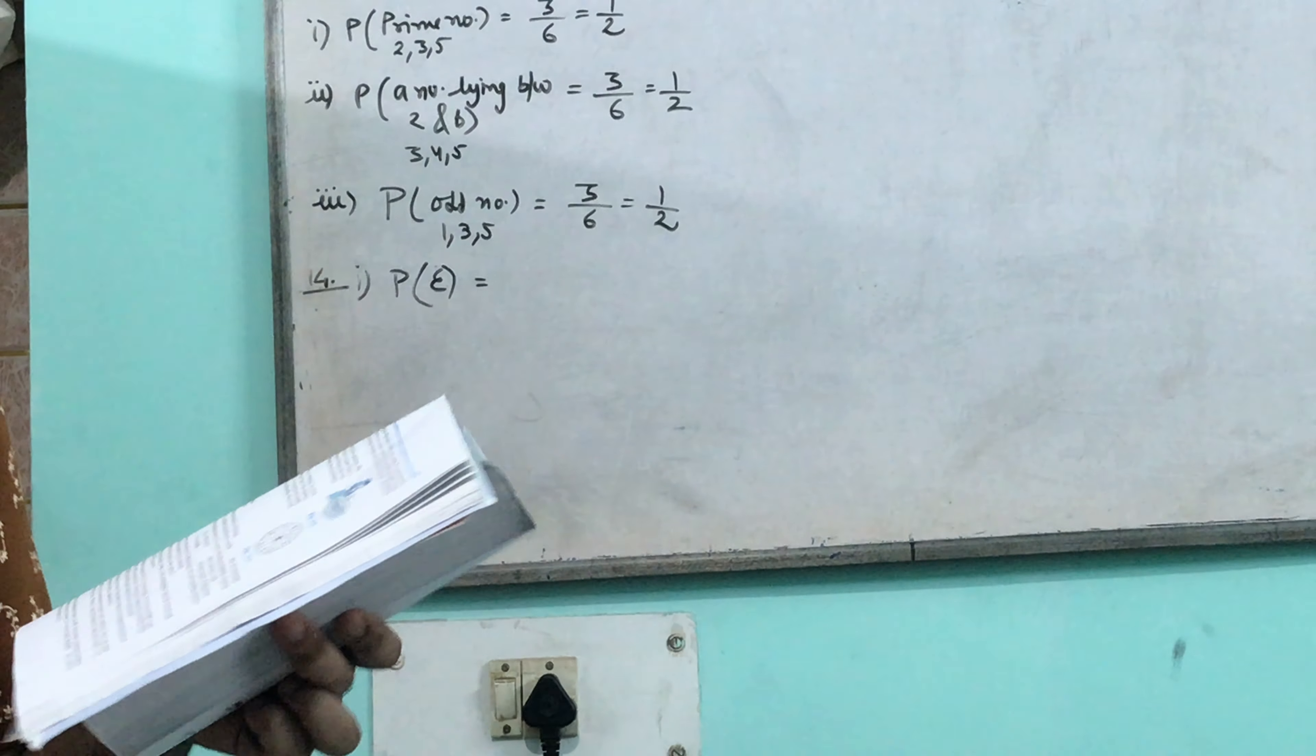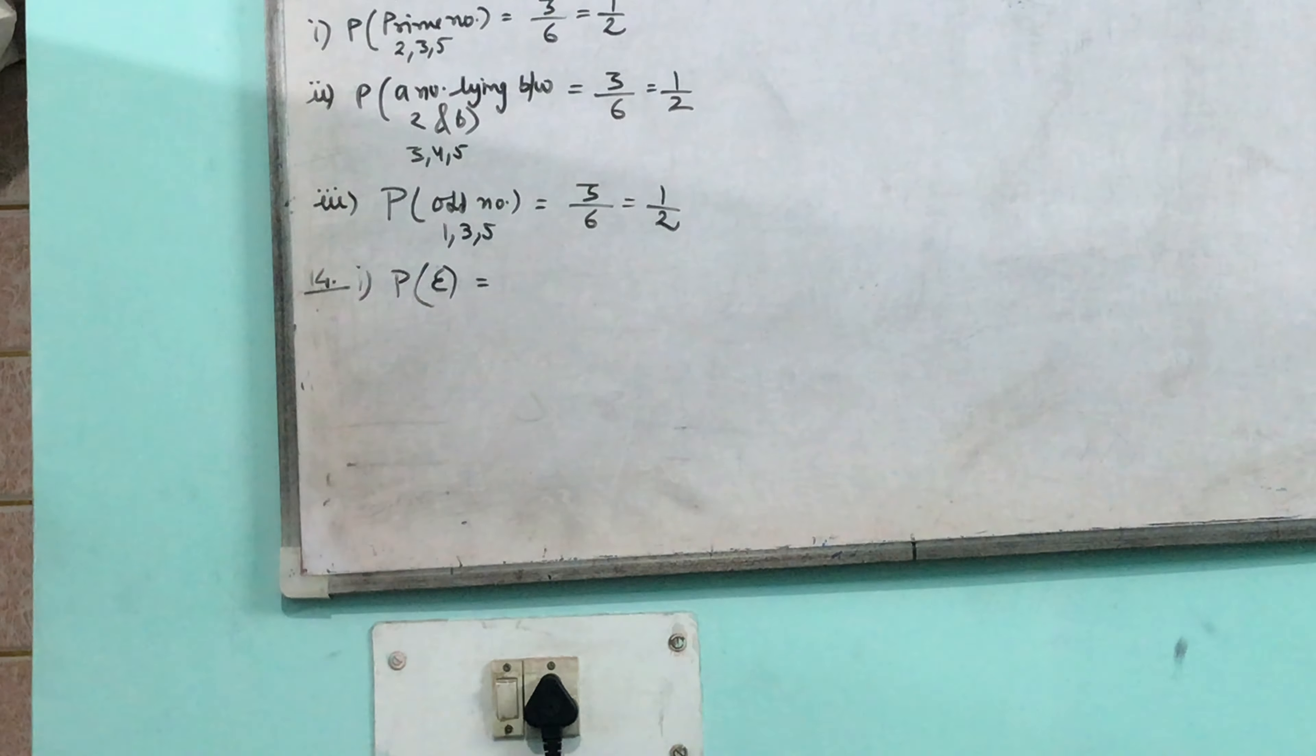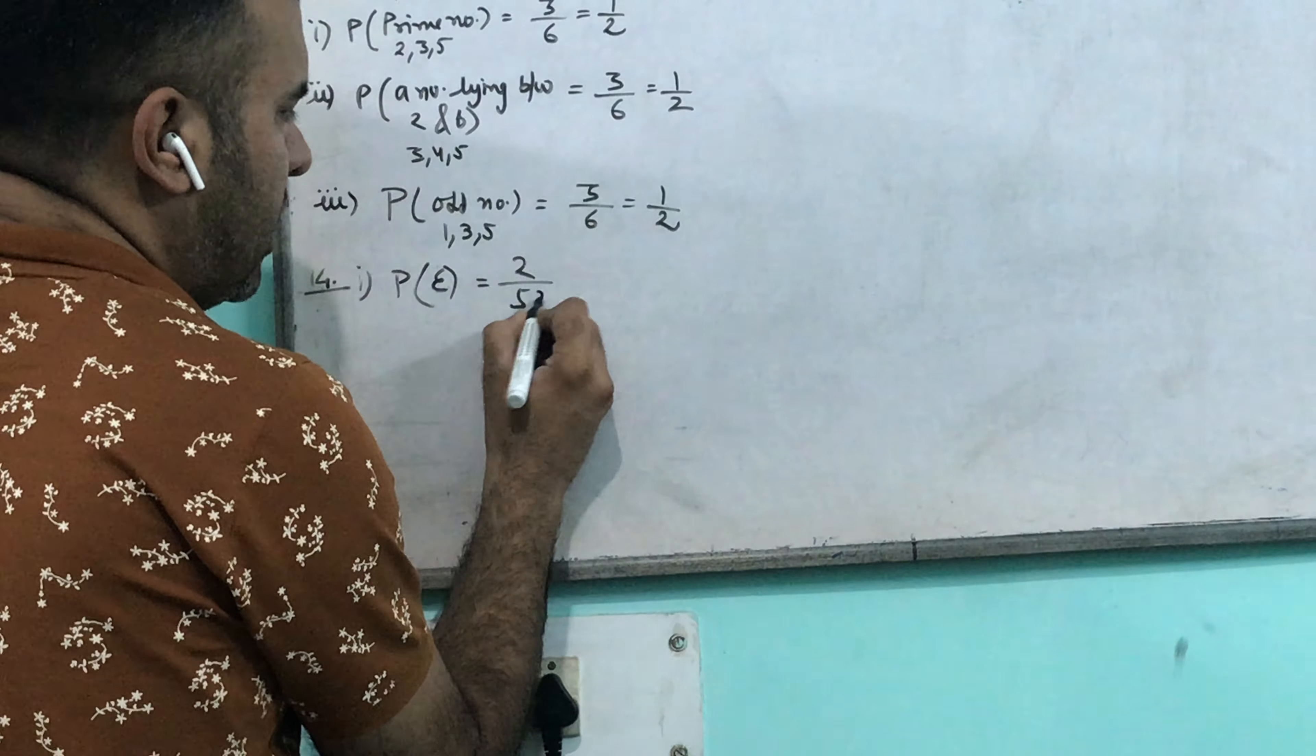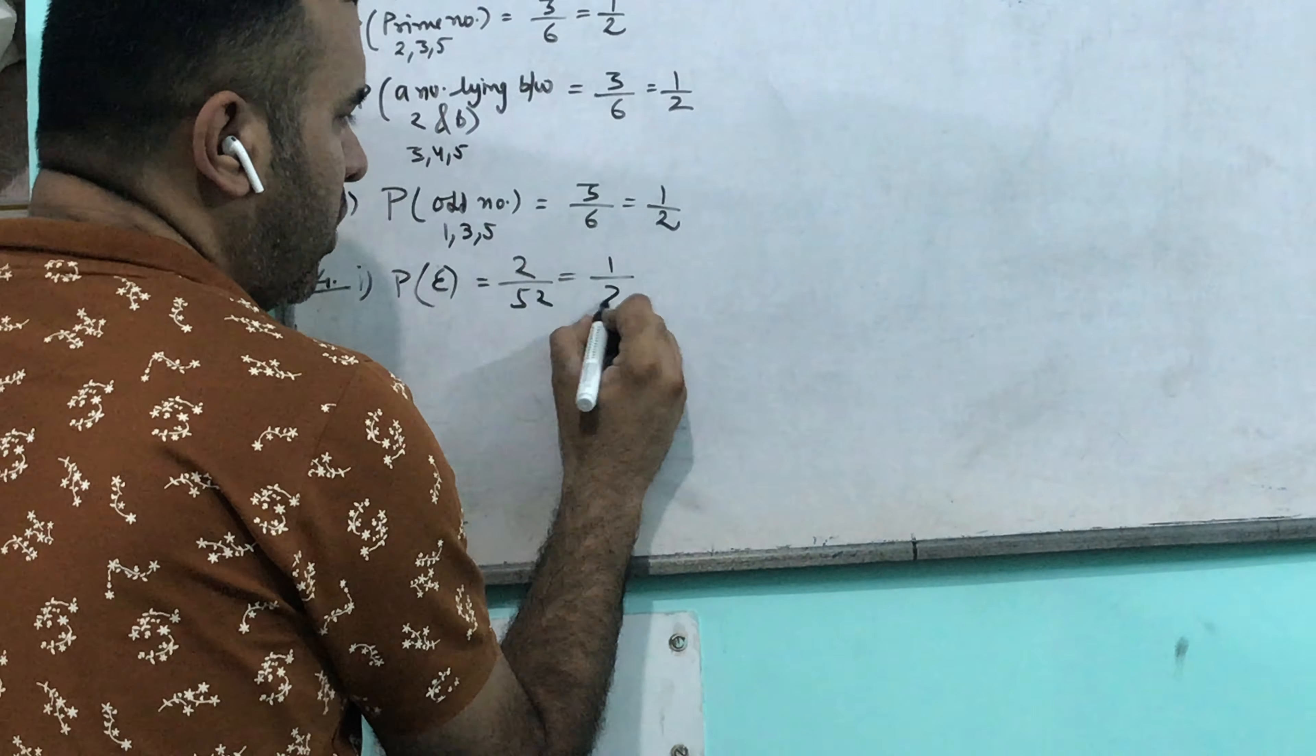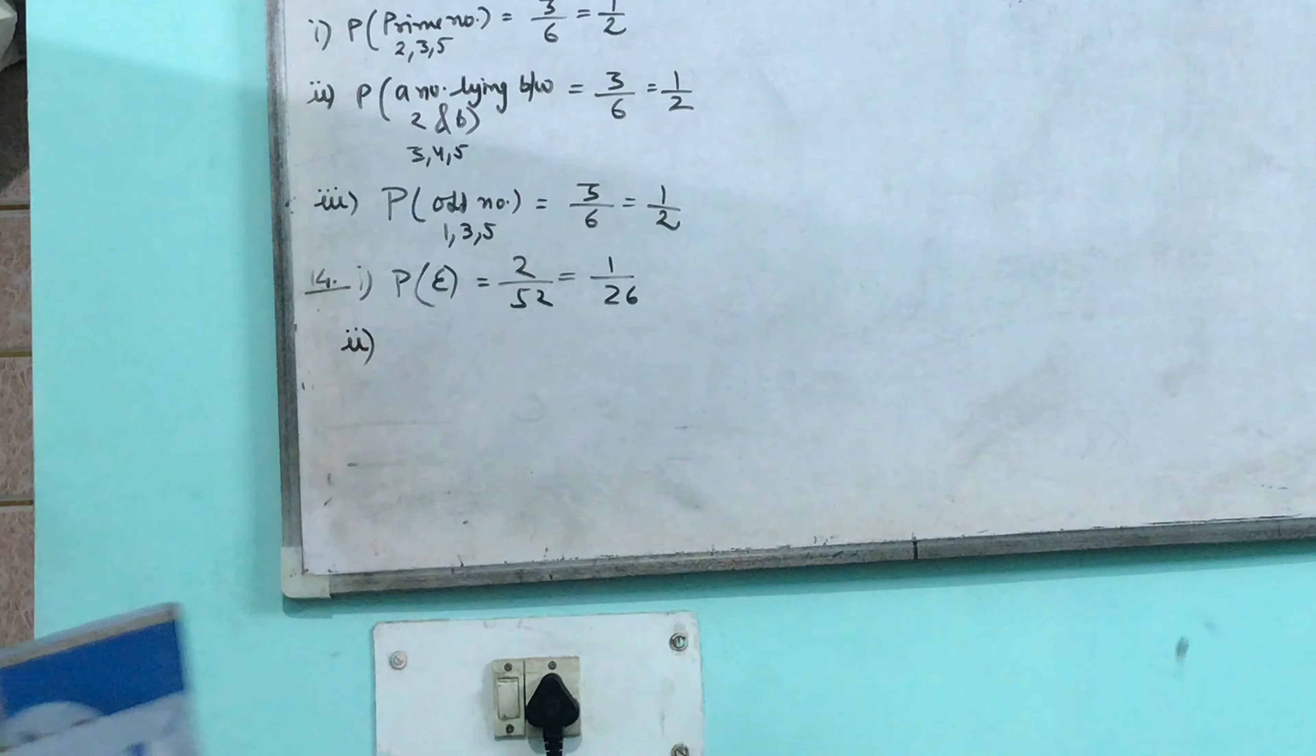King of red color. How many total kings are there? 4. How many red ones? 2. Two red and two black. The total is always 52. The king of red color favorable is 2. The answer is 2 upon 52, which is 1 by 26.